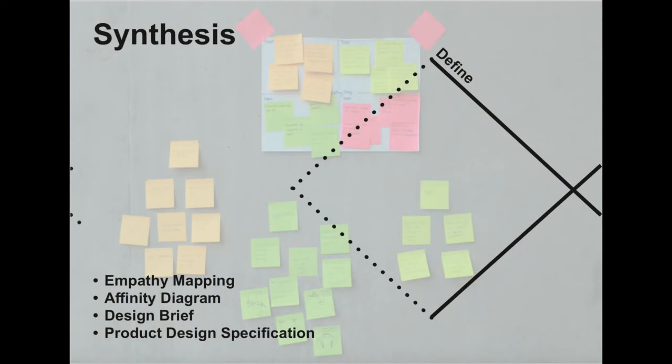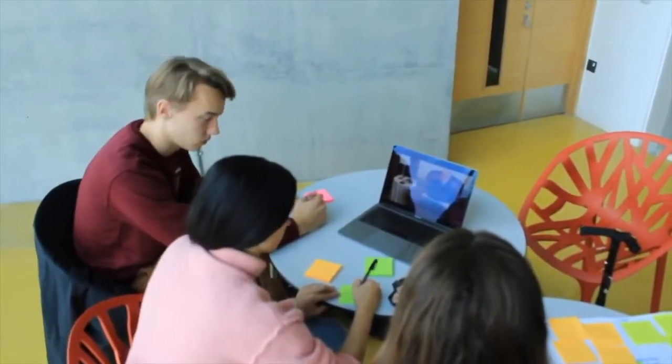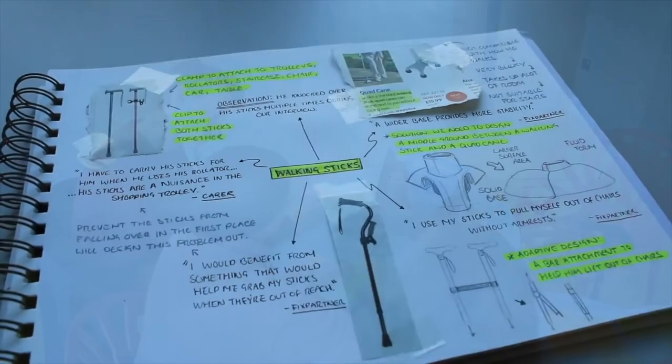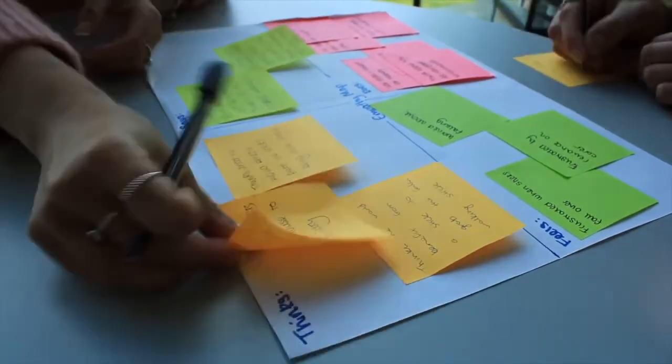Through using an empathy map and these statements, we were able to highlight key pain points that Ralph experiences and better understand his thoughts and frustrations, ensuring we are designing empathetically. Finally, we used affinity mapping to sort and clearly define our insights.